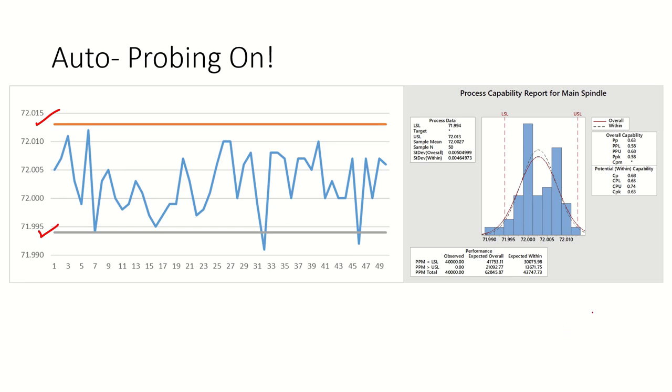That's very typical of an operator making wild adjustments. You can see that if we look at the capability study, we've definitely got results below the bottom tolerance, but we get very close to the top tolerance as well. Our Cp is only 0.68.